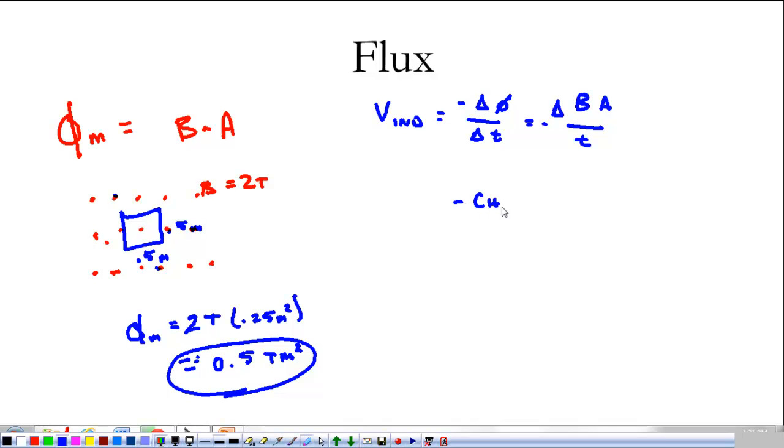Way one is to change the field. That's either turn the magnetic field up or turn the magnetic field down. Now, the other thing we can do is change the area. By shrinking or expanding our loop, we can get a new area which is more magnetic field. That's what flux is.